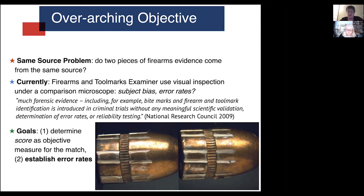Currently, firearms and tool marks examiners use visual inspection, usually under a comparison microscope. This has come under criticism starting in 2009 by the National Research Council, which put firearms and tool mark evidence on the list of forensic evidence where scientific validation is necessary, along with determination of error rates and reliability testing. The two goals CSAFE is addressing are: determining scores as quantitative and objective measures for identification or elimination, and establishing error rates.